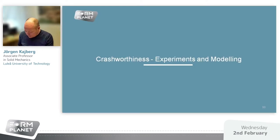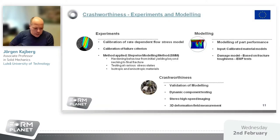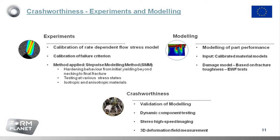Then we have crash worthiness in terms of experiments and modeling, divided into three parts: calibration experiments, a modeling part in terms of performance and crash tests, and finally the crash tests where the modeling is validated. When it comes to modeling, you need to calibrate the proper models. Because crash happens at high deformation rate, you need some kind of rate-dependent flow stress model and also a failure criterion, since very high deformation is usually involved. In this case, we will use a method developed at LTU called the step-wise modeling method.